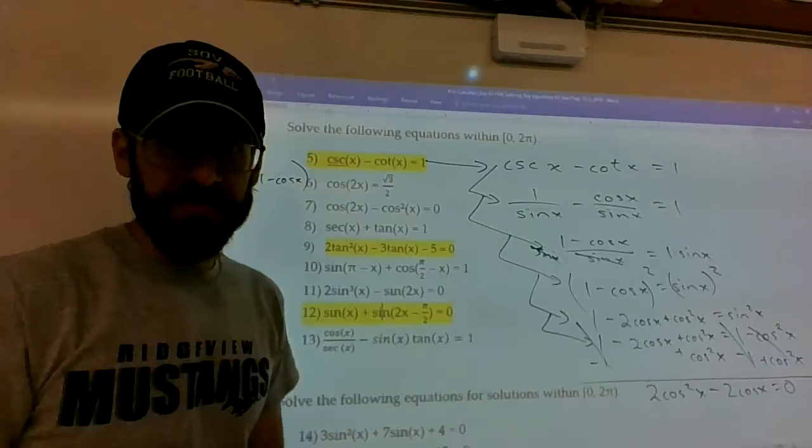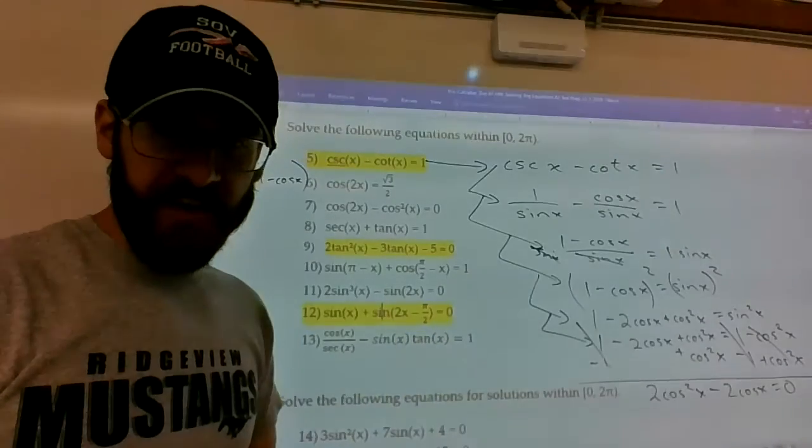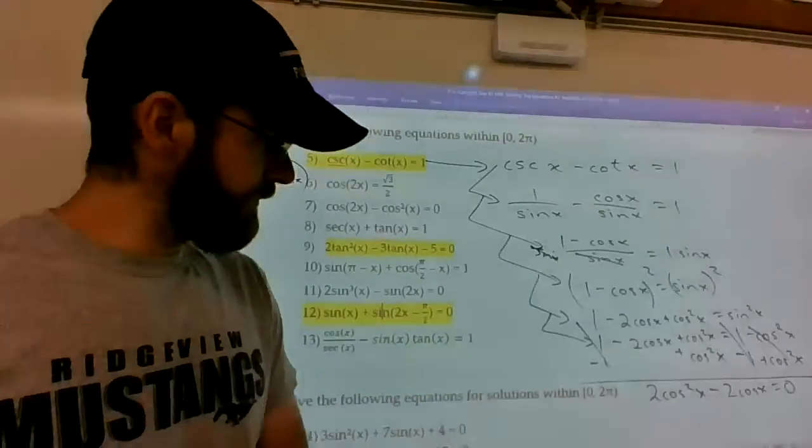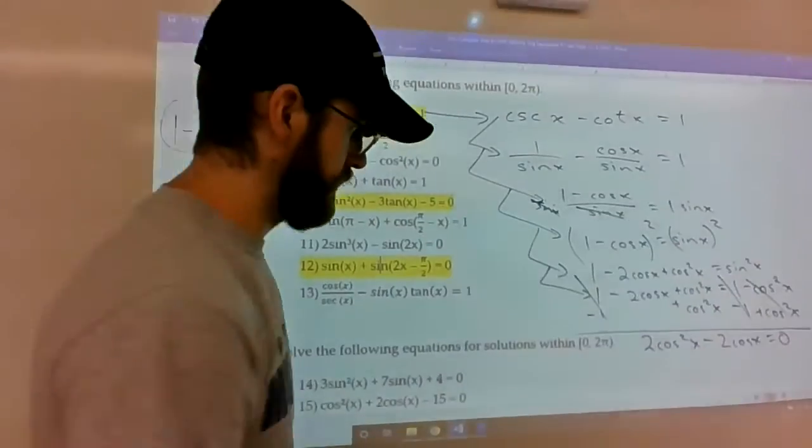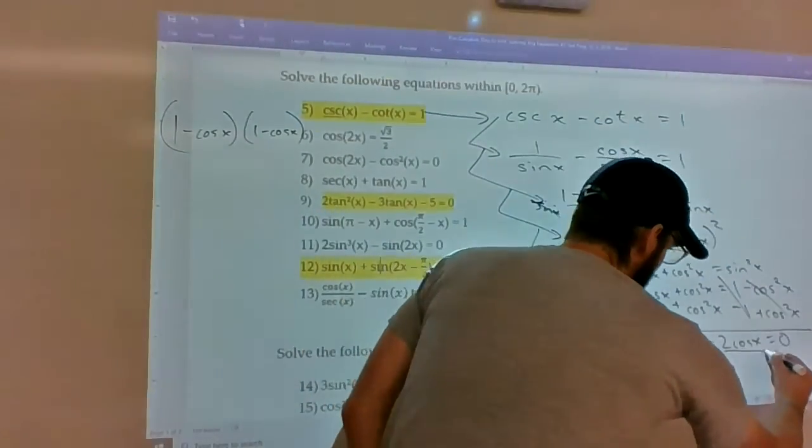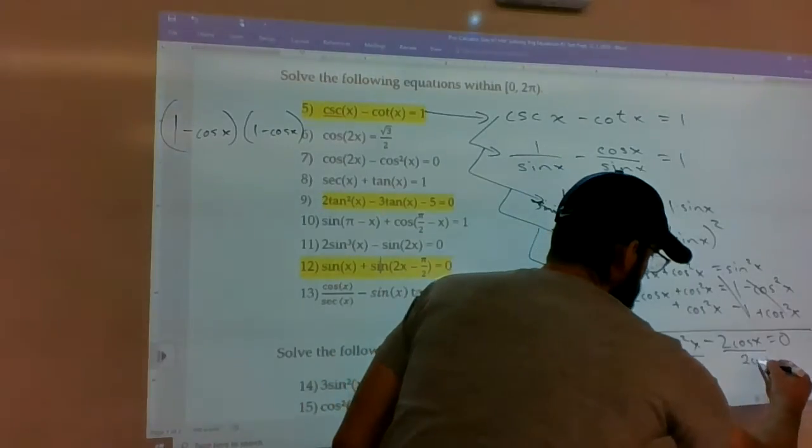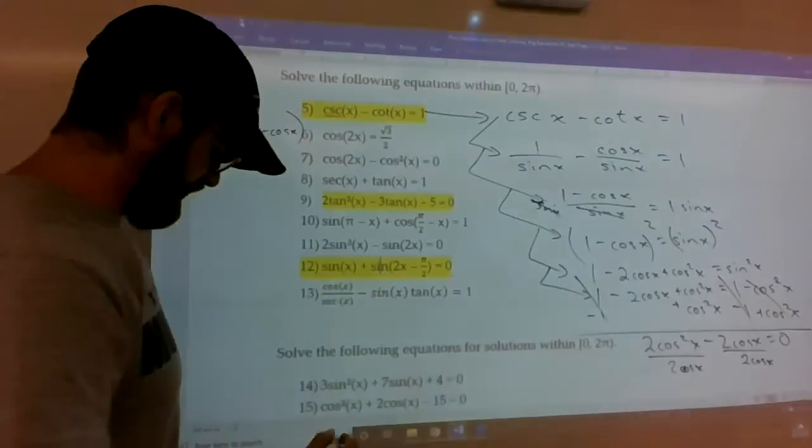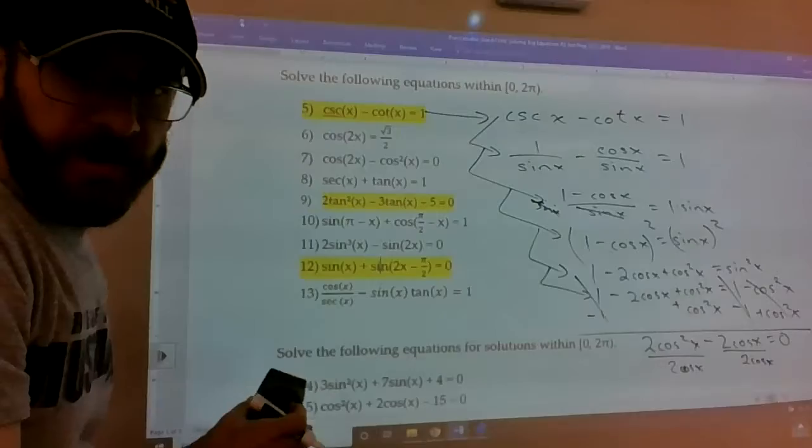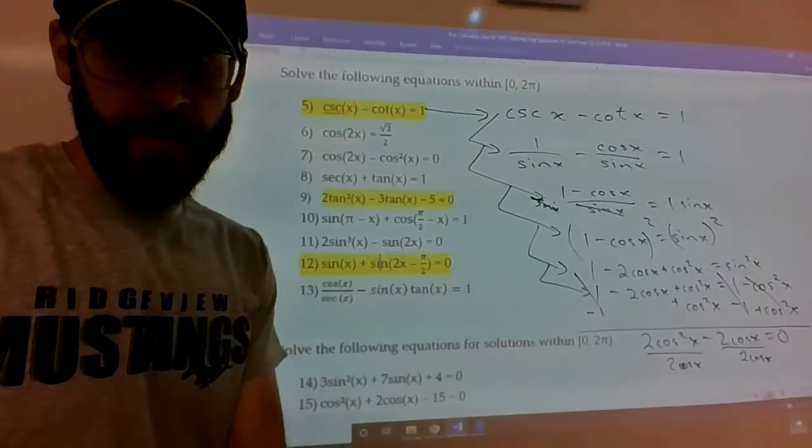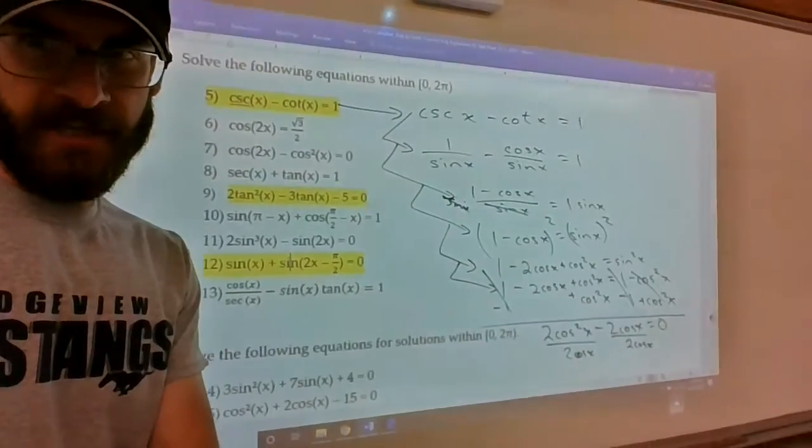Now, at this point, you should be thinking, they share a 2, they share a cos x. Let's factor, which is what we're going to do. So, you're going to factor out a 2cos x, which looks like this. We're running out of room, so I'm going to move over here.